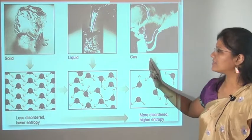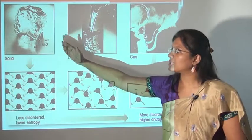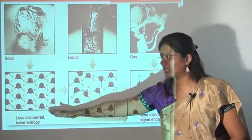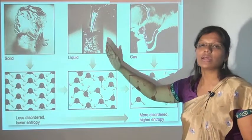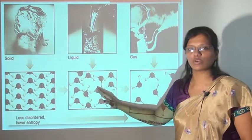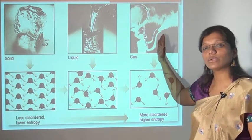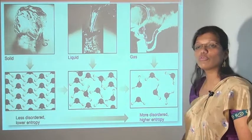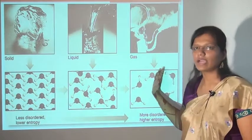As phases change, entropy changes. In the solid phase, when water is in the form of ice, the molecules are very well arranged — less disorder and lower entropy. When it becomes liquid form, it becomes somewhat disordered and entropy increases. When it converts to vapor phase, it becomes more disordered and entropy is very high, as the molecular arrangement becomes increasingly disarranged.